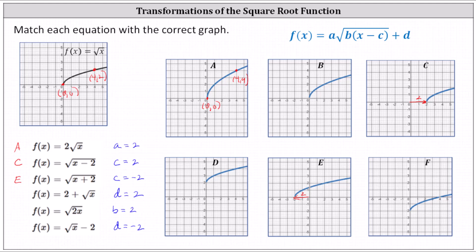For the fourth function, d is positive two, which indicates the square root function has been shifted up two units. If we wanted to find points on the graph, we would add two to the y values, giving us (0, 2) and (4, 4). Analyzing the remaining graphs, this would be graph D, which passes through (0, 2) and (4, 4), or just recognizing this is the square root function shifted up two units.